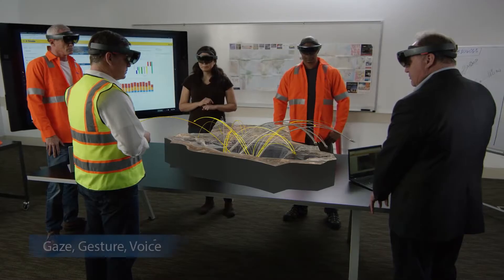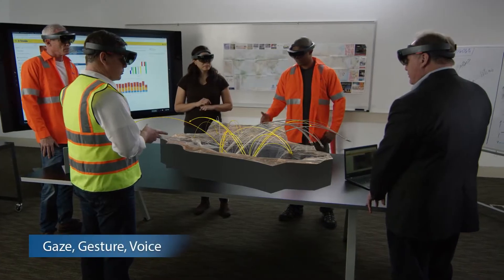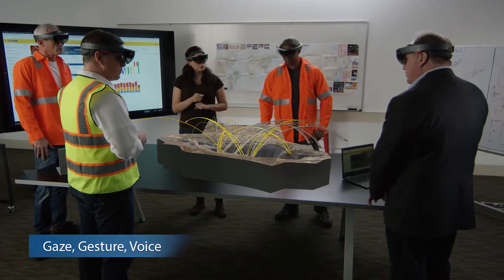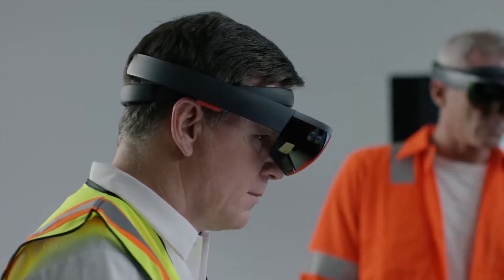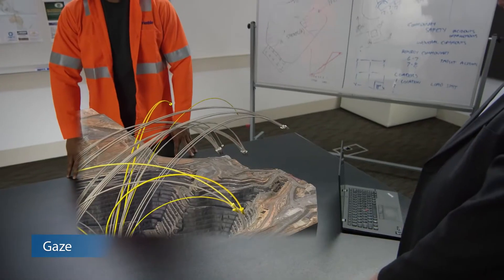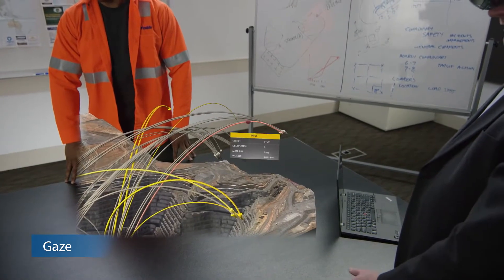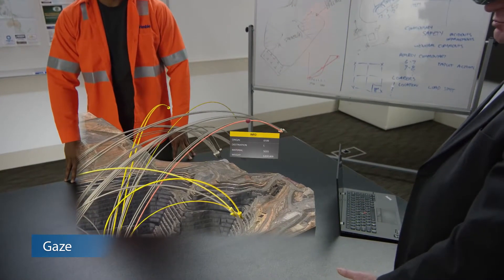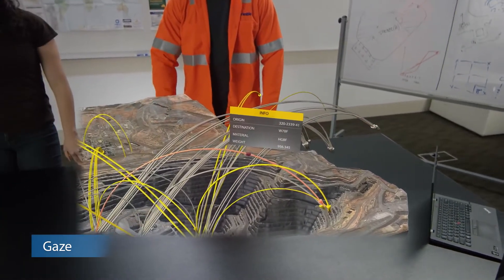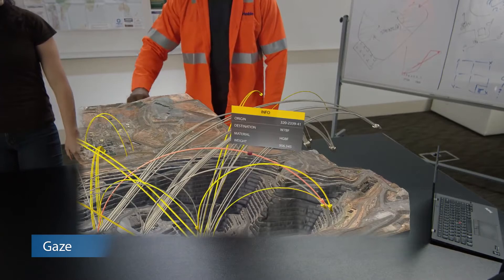To visualize and interact with holograms, the HoloLens uses gaze, gesture, and voice inputs. Your gaze, similar to your mouse, controls your cursor. Move your head around and your cursor follows, centered in your field of view.